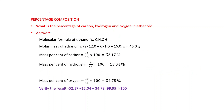Let's see one more example: what is the percentage of carbon, hydrogen, and oxygen in ethanol? The molecular formula of ethanol is C₂H₅OH. Now let's find the molar mass of ethanol: 2 atoms of carbon multiplied by atomic mass of carbon, plus 6 atoms of hydrogen — 5 from C₂H₅ and 1 from OH — multiplied by atomic mass of hydrogen, plus atomic mass of oxygen. This gives 46 grams.